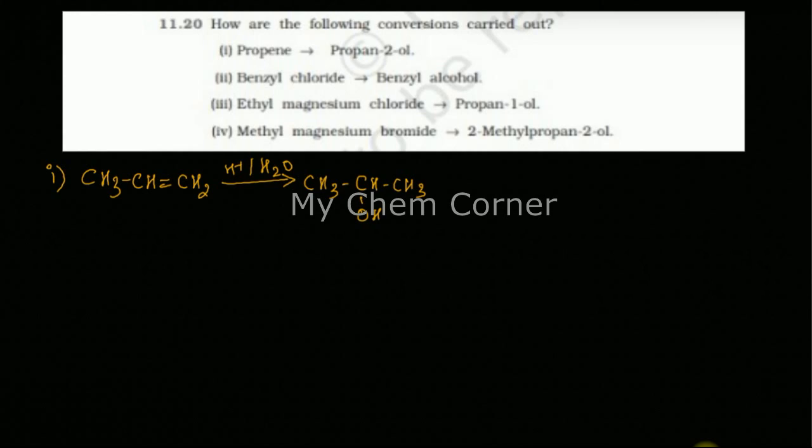Second one is benzyl chloride to benzyl alcohol. Here I have a benzene ring. When I say benzyl chloride, I should have a carbon bonded to it and I have a chloride. This has to get converted to benzyl alcohol, so what is the difference here? This will change to CH2-OH. What is the change that you can see? CL changes to OH bonding here.